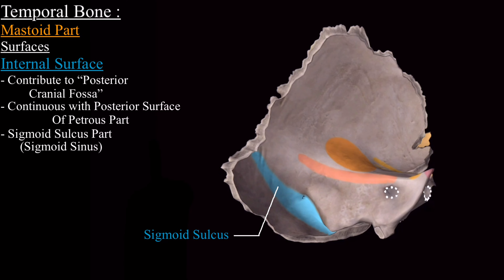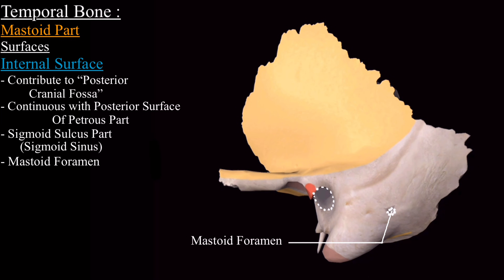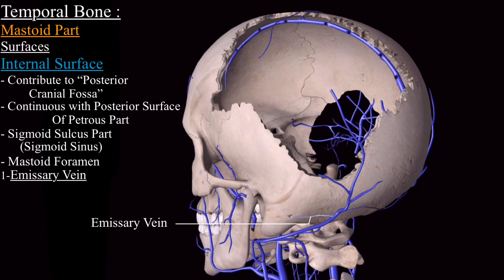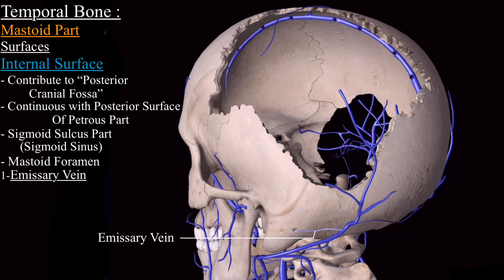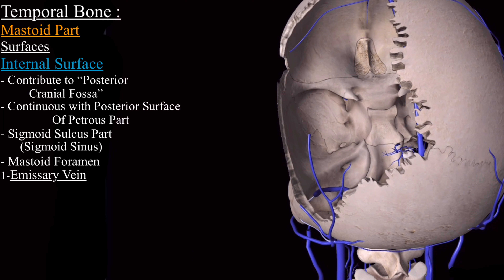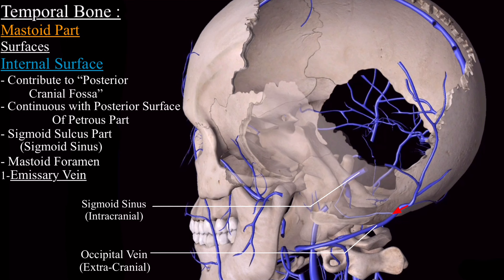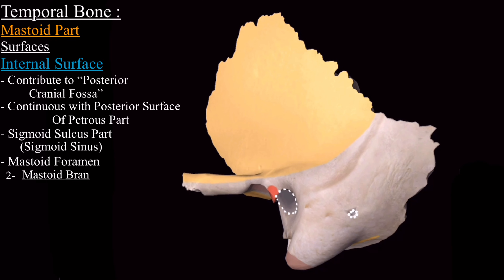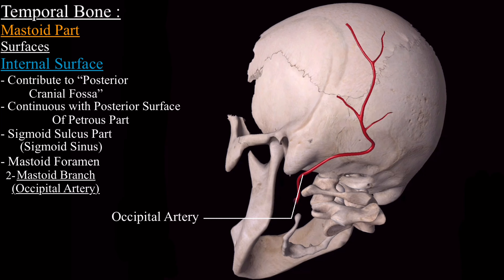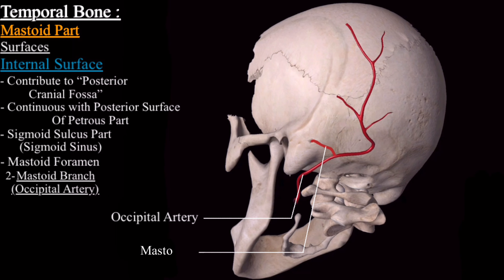Through the mastoid foramen pass two structures: the emissary vein and the mastoid branch of the occipital artery. The emissary vein originates from the occipital vein and connects internally to the sigmoid sinus, linking the inside to the outside. The mastoid branch of the occipital artery also passes through the mastoid foramen to supply structures inside.